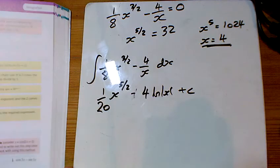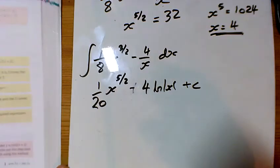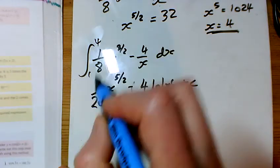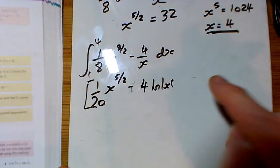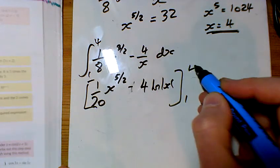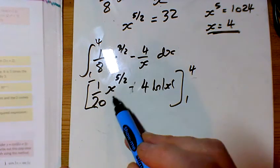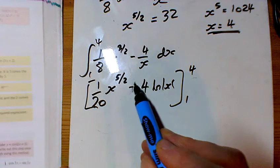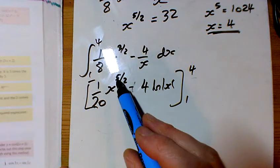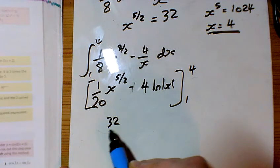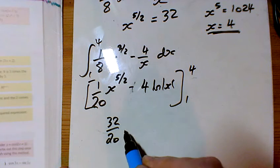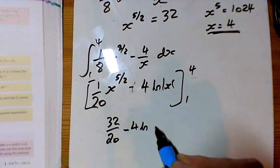And for the last part, they want us to do this between 1 and 4. So we'll stick a 1 and a 4 in here. So sticking a 4 in there, 4 square rooted is 2, 2 to the 5 is 32. So I've got 32 over 20 minus 4 ln 4.